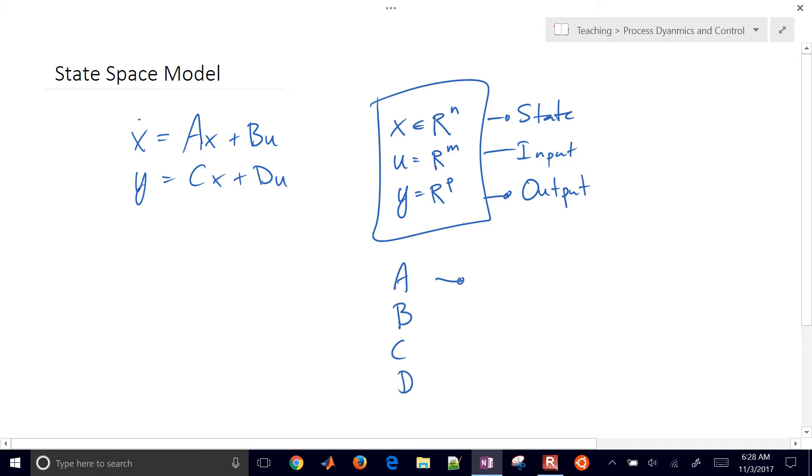The A matrix is going to be an N by N matrix. The B matrix is going to be N by M. The C is going to be P by N, and the D matrix will be a P by M matrix.